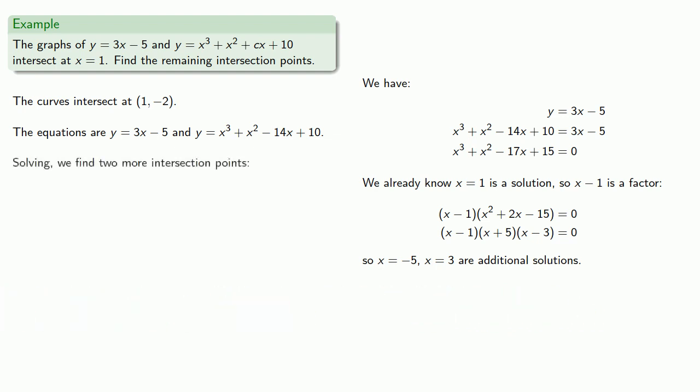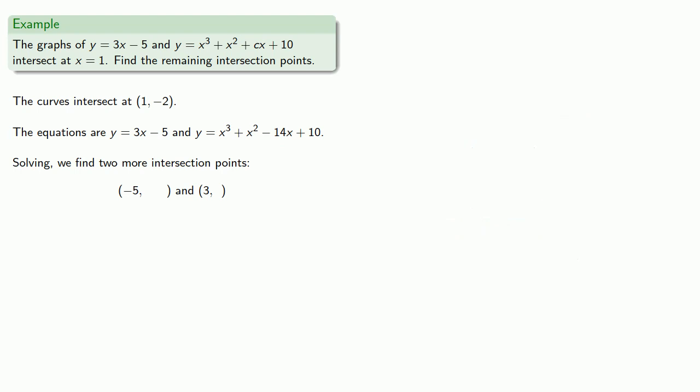And so solving, we find two more intersection points: a point with an x-coordinate of negative 5 and a point with an x-coordinate of 3. Well, technically these are half points. We need to know what y is.